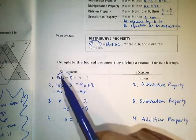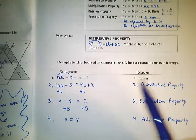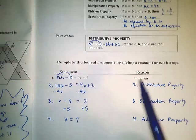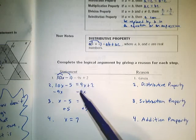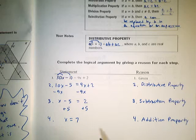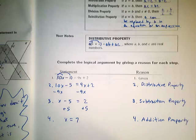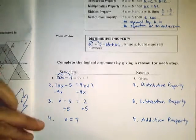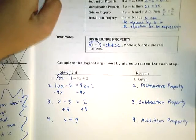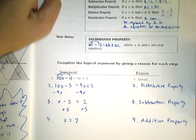This is called the two-column proof. You can see that I have a column of statements on the left and a column of reasons on the right — hence the two-column proof. It starts with a statement you know is true, called the given. From there, we make logical conclusions down the page. It's not always just simple algebra; we're going to use our algebraic skills in new ways.